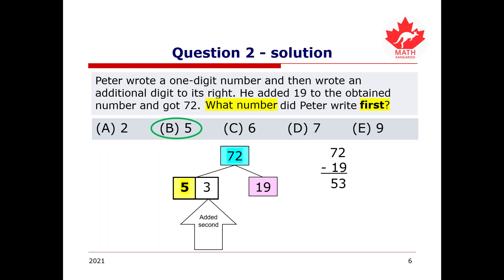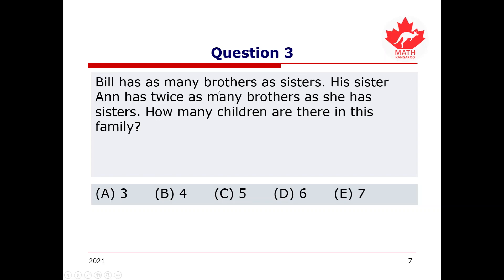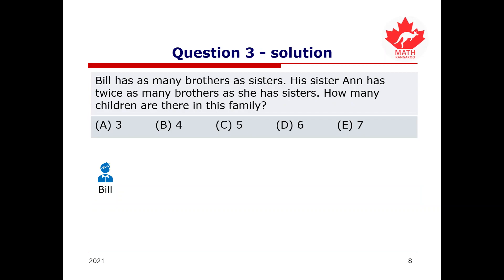Question 3 states that Bill has as many brothers as sisters. His sister Anne has twice as many brothers as she has sisters. How many children are there in this family? Pause the video and try to figure out the solution yourself. We need to find a situation where both statements hold true simultaneously, and from that we can determine the total number of children.